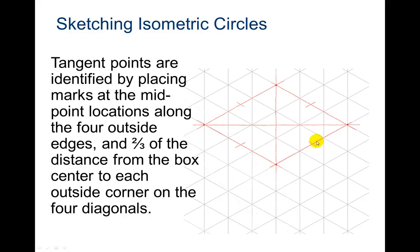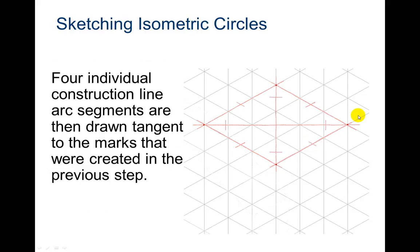This is where we're going to try to draw and connect those lines and do the best circle we can. Four individual construction line arc segments are then drawn tangent to the marks that were created in the previous step. So what they did now is they're trying to draw these lines so that we can try to get that circle or that ellipse perfect. Notice they just drew them like halfway here. And then here was the two-thirds that they were talking about. We're trying to get this ellipse. I guess I shouldn't say perfect circle. It's really an ellipse.